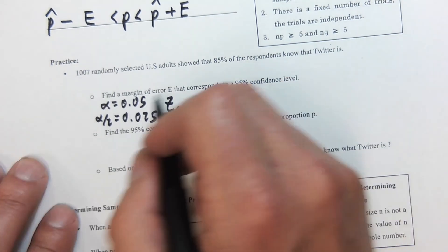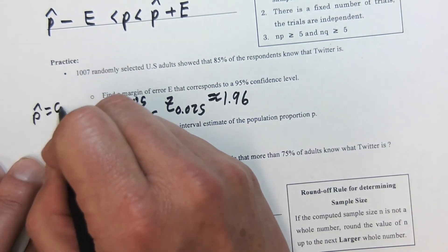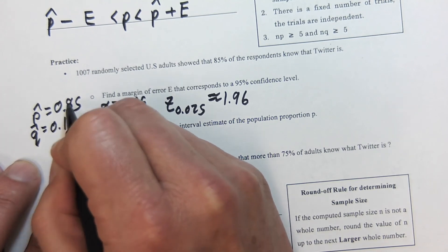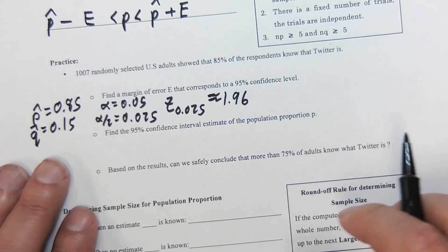We also know that P hat in this case is 0.85 and Q hat is 0.15—that's 1 minus that. You can put that in your calculator if you need to.